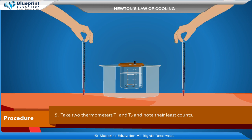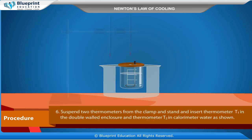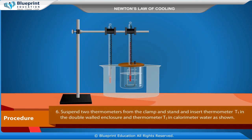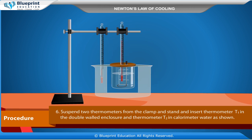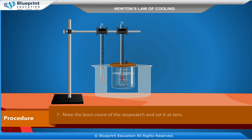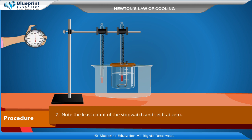Take two thermometers, T1 and T2, and note their least counts. Suspend two thermometers from the clamp and stand, and insert thermometer T1 in the double-walled enclosure and thermometer T2 in the calorimeter water, as shown. Note the least count of the stopwatch and set it at zero.